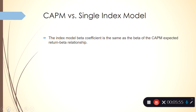Extensions of CAPM include consumption-based CAPM, where human capital is added into the model. We'll also hear about some tests for CAPM. In general, what we see is that CAPM fails on average because the average alpha value — the average extra return — is not equal to zero.